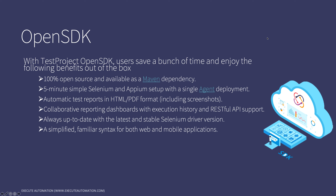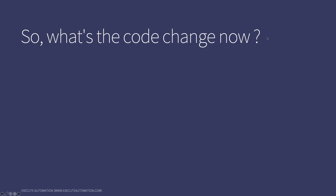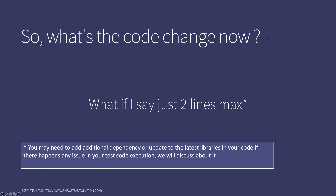There's a simplified, familiar syntax for both web and mobile applications, complete test runner capabilities for both local and remote execution using the test agent, and cross-platform support for Mac, Windows, Linux, and Docker. It also stores and executes tests locally with any control tools such as Git. With the open SDK the maximum code change you need to make in your existing project is just two lines of code — you may need to update some plugins to the latest version, but that's it.